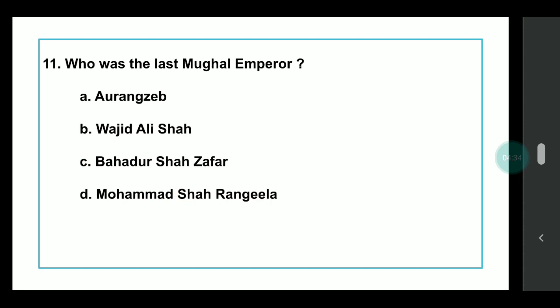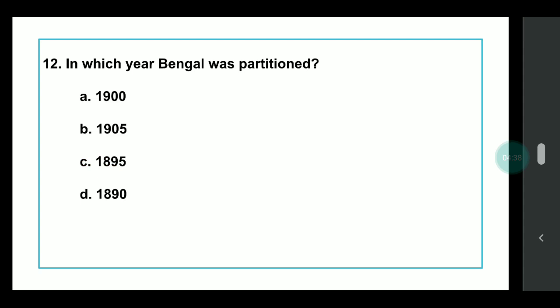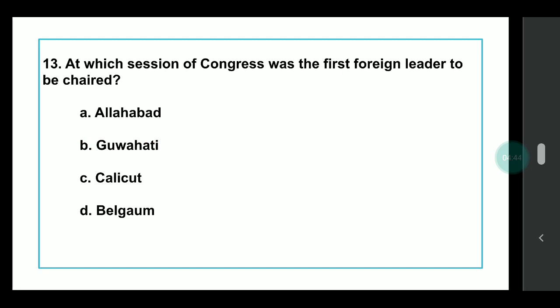Q11: Who was the last Mughal Emperor? Answer: Bahadur Shah Zafar. Q12: In which year was Bengal partitioned? Answer: 1905. Q13: At which session of Congress was the first foreign leader to be chaired? Answer: It was at Allahabad, and that foreign leader was George Yule. I hope you have revised from my lectures so you are able to attempt these MCQs well.